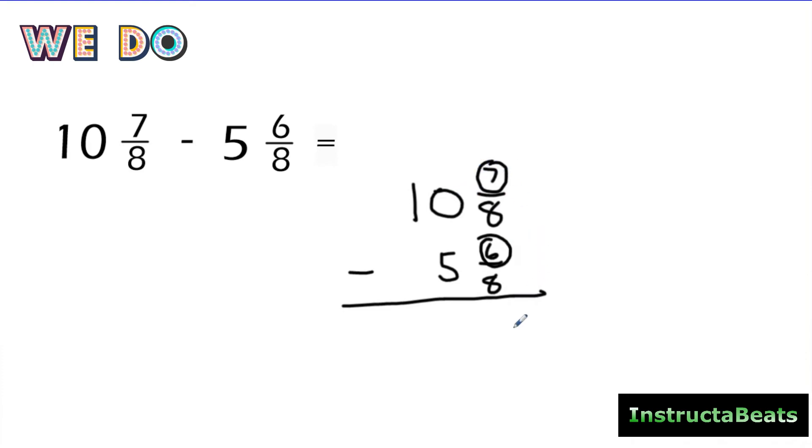7 minus 6. More on the top, no need to stop. So 7 minus 6 is 1. My denominator stays the same. Now when you come over to your whole numbers, you could either think about this as 10 minus 5 and use your number sense.